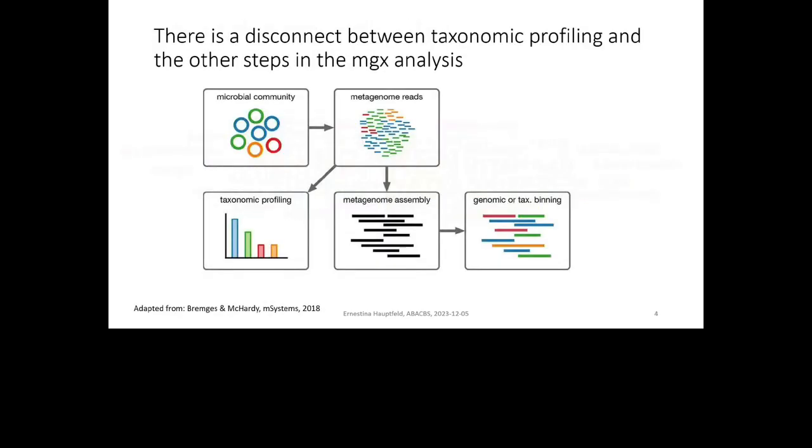Well, when we do metagenomics has been around for 20 years almost at this point, and we have developed a lot of best practices, such as assembly, so we don't just work with the short reads, we assemble them into longer sequences called contigs, we bin them and group the sequences together into metagenomic assembled genomes, or MAGs. And yet, none of this information is included in the profiling step, usually. And so this has bothered me, and this is why I decided to make RAT.